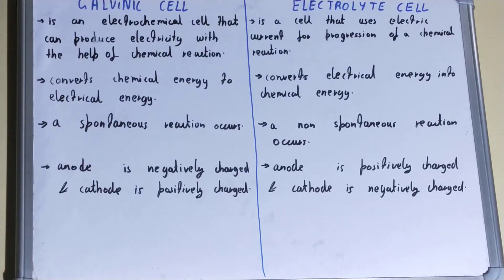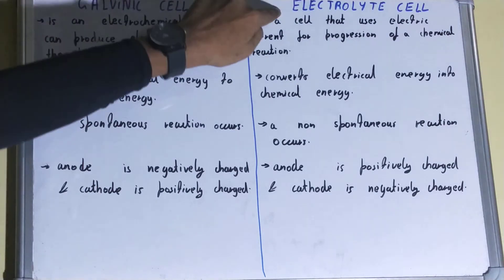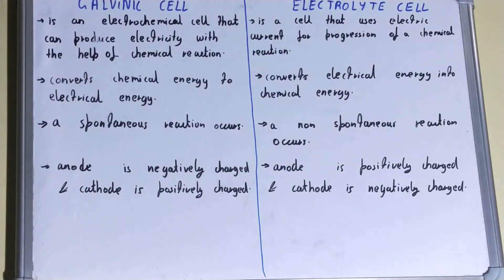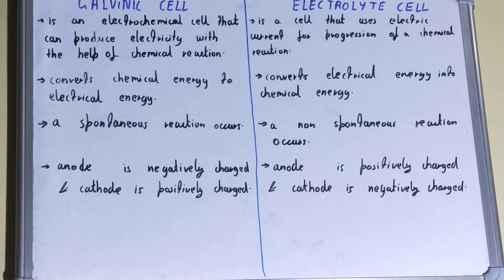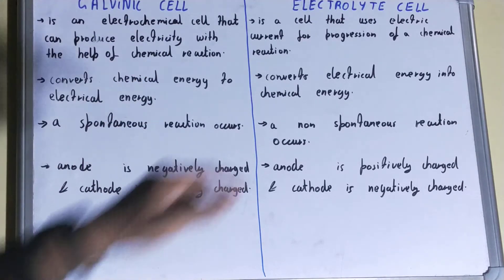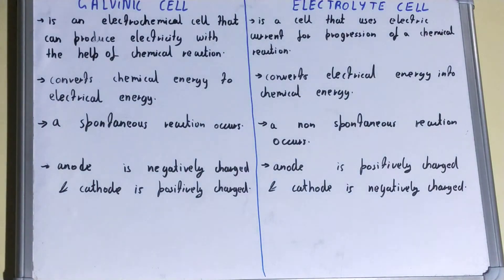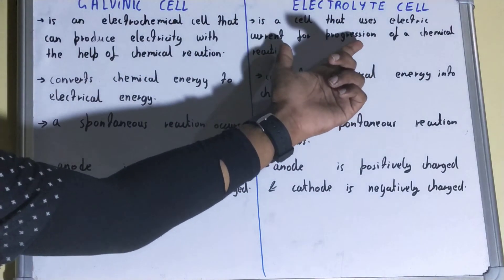In this video, I'll be covering the difference between a galvanic cell and an electrolytic cell. A galvanic cell is an electrochemical cell that produces electricity with the help of chemical reactions — we obtain electricity from the chemical reaction. An electrolytic cell, on the other hand, uses electric current for the progression of a chemical reaction — electric current is used to drive the chemical reaction.